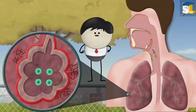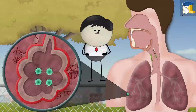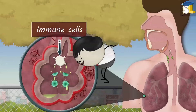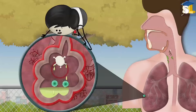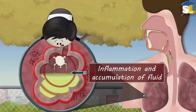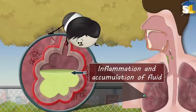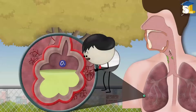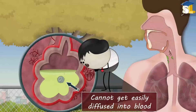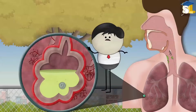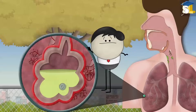Now, to protect ourselves, the immune cells start attacking the microorganisms, causing inflammation and accumulation of fluid in the alveoli. As a result, the inhaled oxygen cannot easily diffuse into blood, thus causing difficulty in breathing.